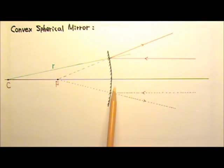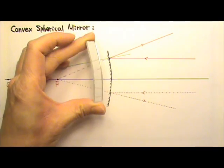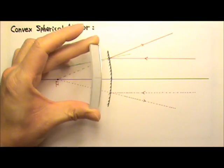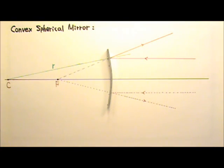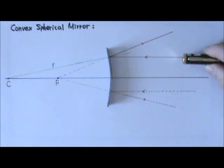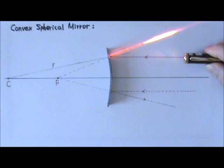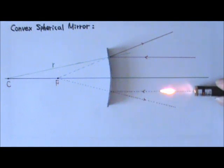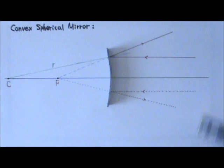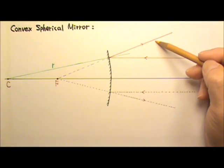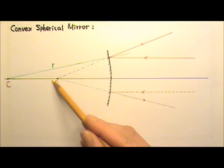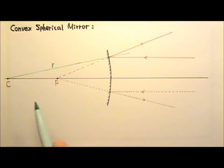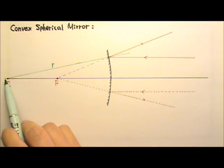A spherical mirror curved the other way is called a convex mirror. Here I have a convex mirror for demonstration — again, it's only curved in one dimension. I'm going to shine a laser beam at it. You can see that this paraxial ray gets reflected away from the center, and this paraxial ray also gets reflected away from the center. These two reflected rays are never going to meet. However, their ray extensions back the other way would meet over here, and that is the focal point for the convex mirror.